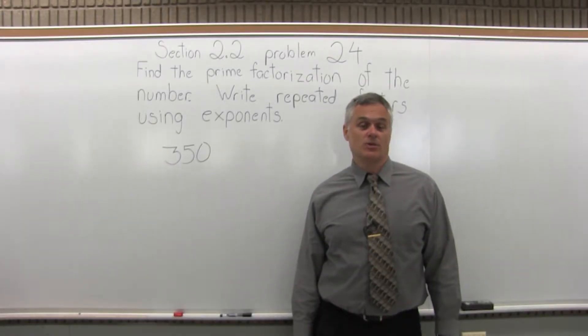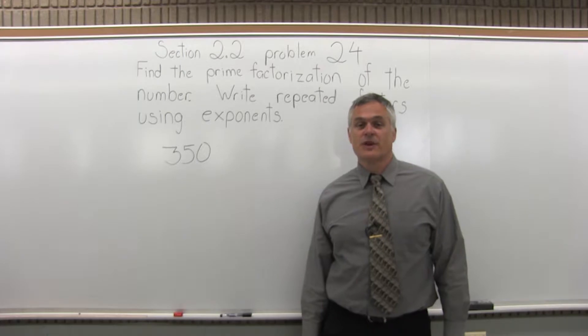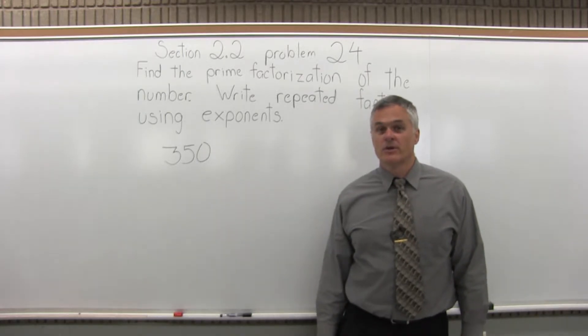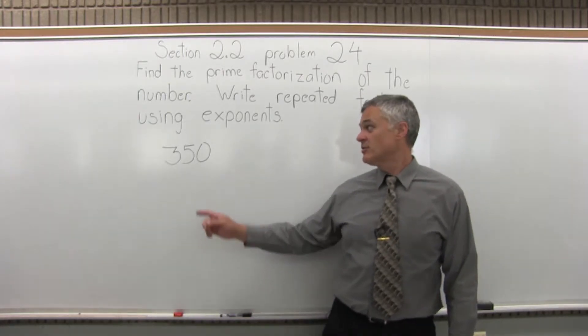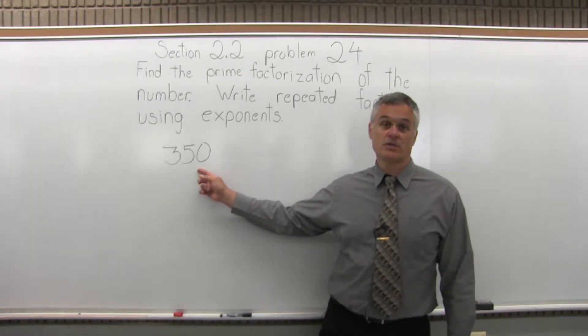This is Section 2.2, Problem 24. It says find the prime factorization of the number, write repeated factors using exponents, and the number we have to find the prime factorization of is 350.